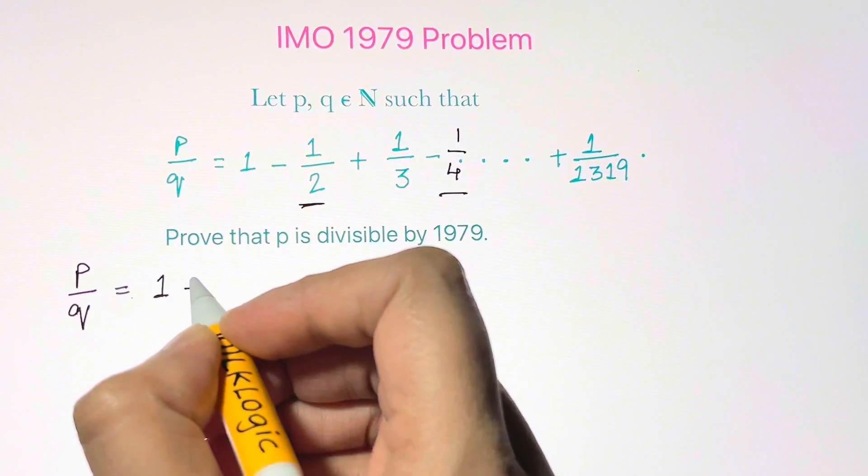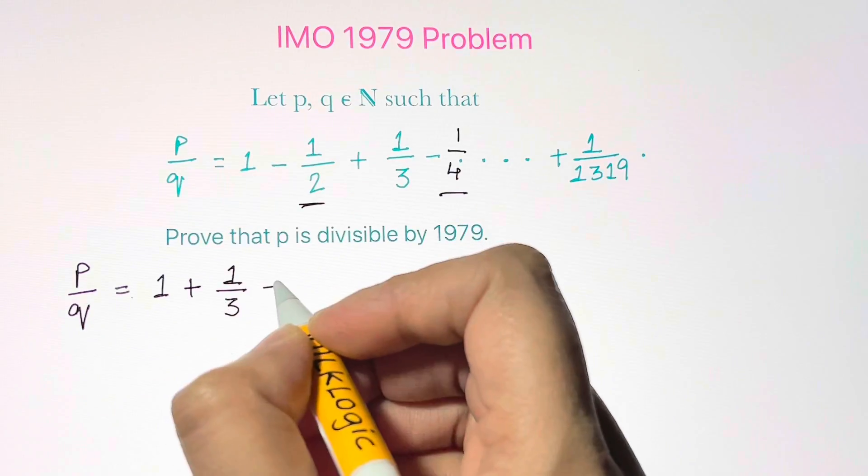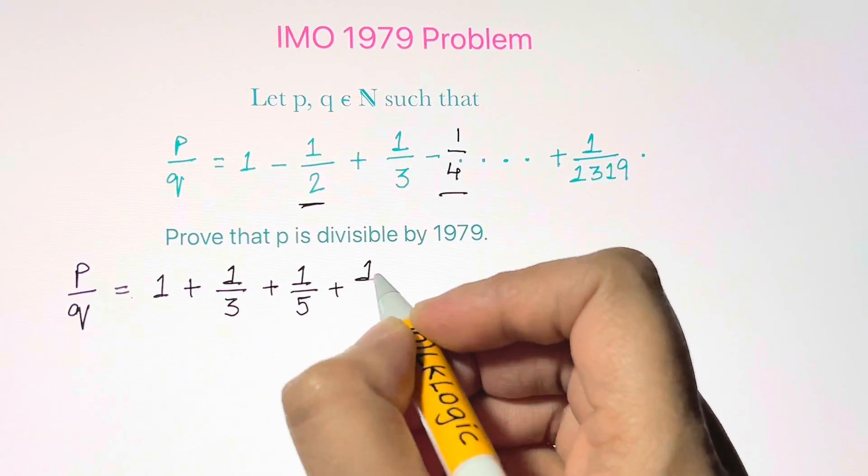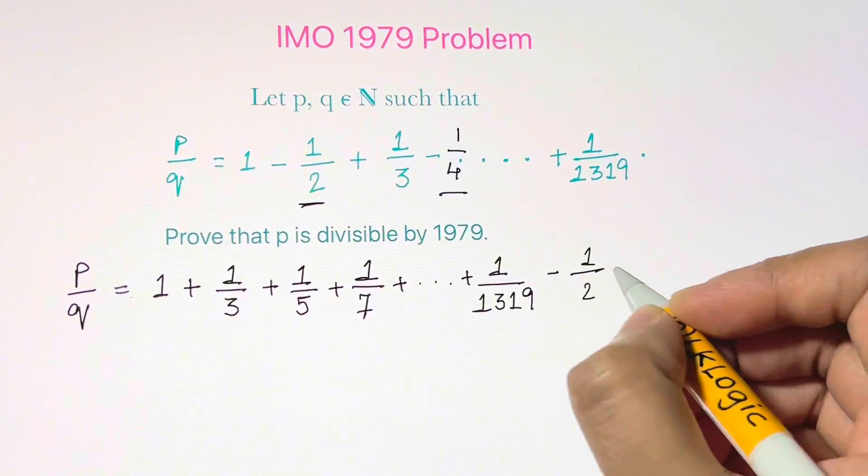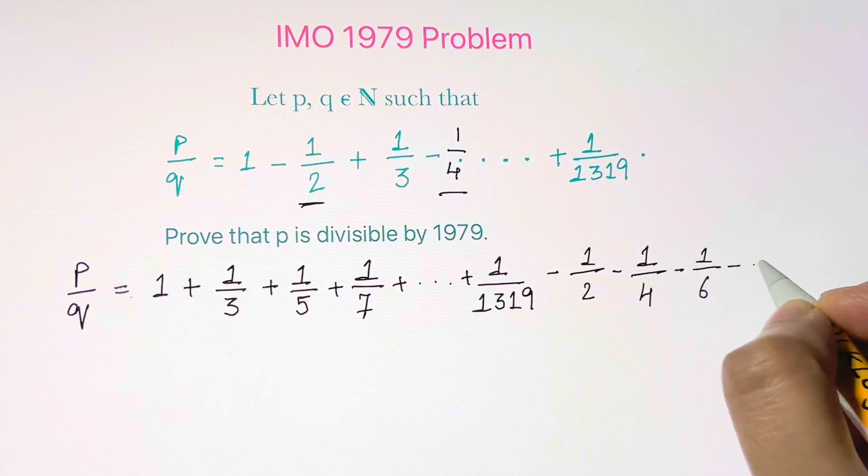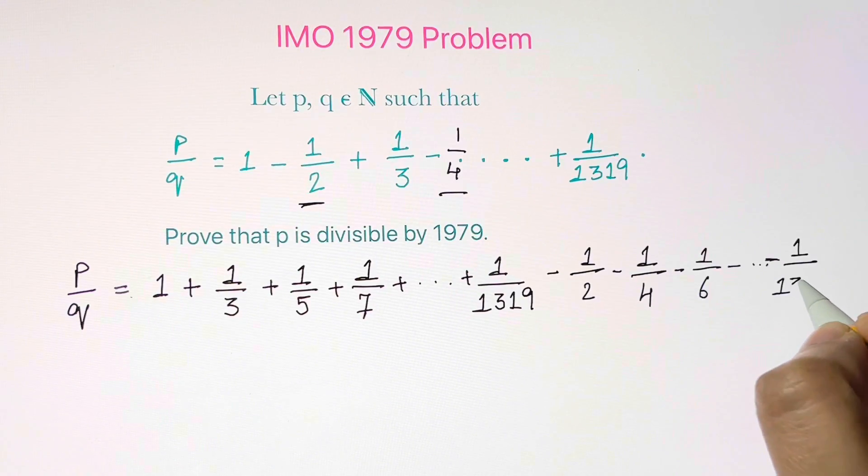So P over Q by definition is summing all the odd terms till 1 over 1319 minus all the even terms up to 1 over 1318.